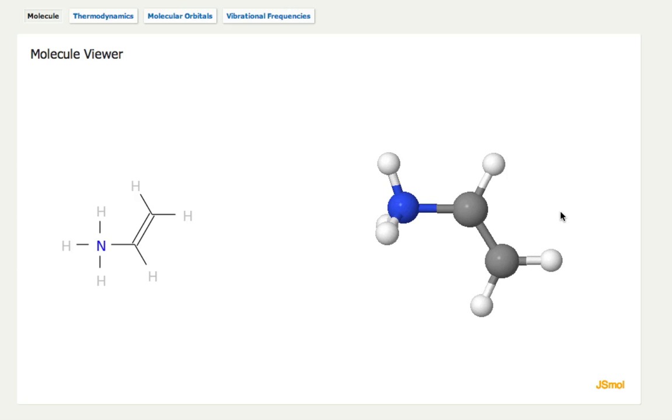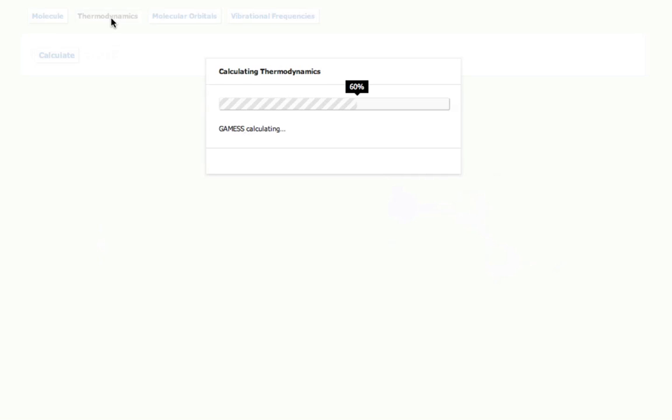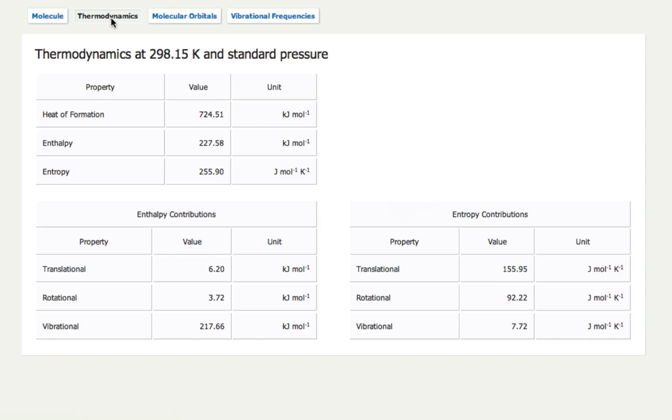Now I'm presented with three different options here, thermodynamic properties of the molecule. Calculate it here, I get the heat of formation, I get the enthalpy-entropy contributions, and then I get the translational, rotational, and vibrational contributions to the entropy.